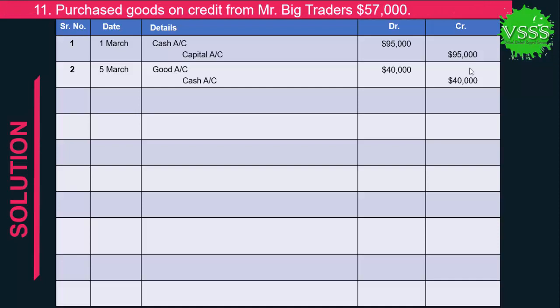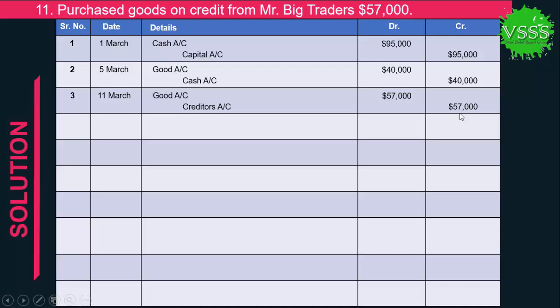Transaction 3: Purchased goods on credit from Mr. Big Trader, $57,000. This also affects two accounts: goods and creditors. Goods are assets and they increase, so goods is debited by $57,000. Creditors are a liability and when our liability increases it is credited by $57,000.